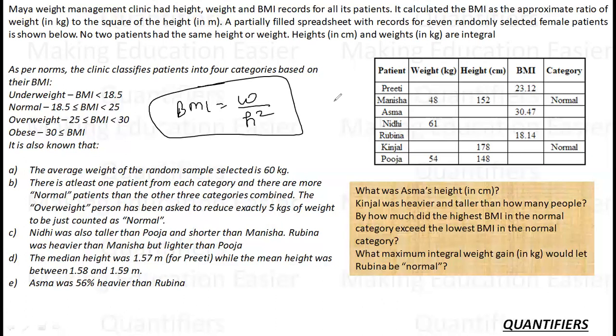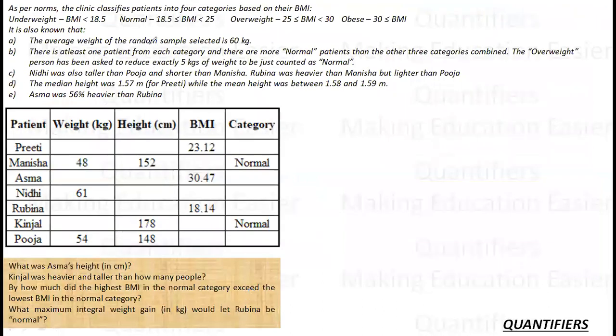Heights and weights are in integer values. Note no two have same height. Let's quickly write what is given. Average weight of sample selected is 60 kgs for these 7 people, so total weight is 420 kgs.